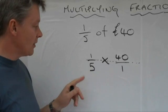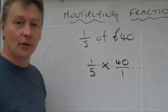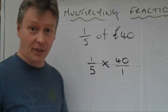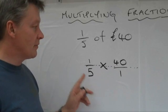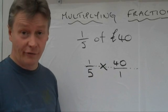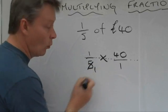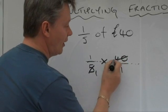So what I'm going to do is, I'm going to say, that 5 and that 40, I can make a little bit smaller, so it makes it a little bit easier for me to deal with. So how many times does 5 go into 40? 8 times. So, I can now make that 1, and I can make that 8.